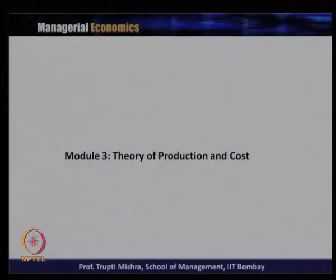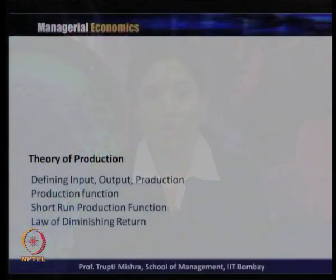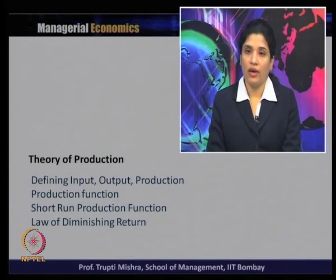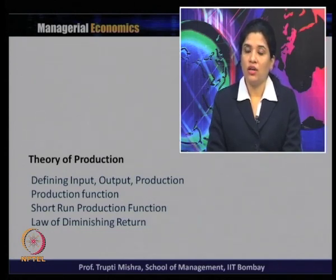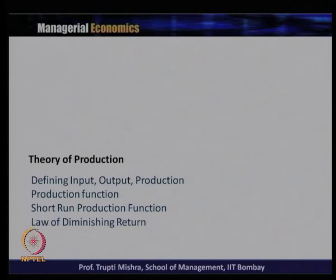Module 3 covers the theory of production and cost. Topics include defining inputs, outputs, and production; different kinds of production functions; and the short-run production function with the law of diminishing returns (law of variable proportions). This law describes three stages of production based on the relationship between total product, average product, and marginal product.